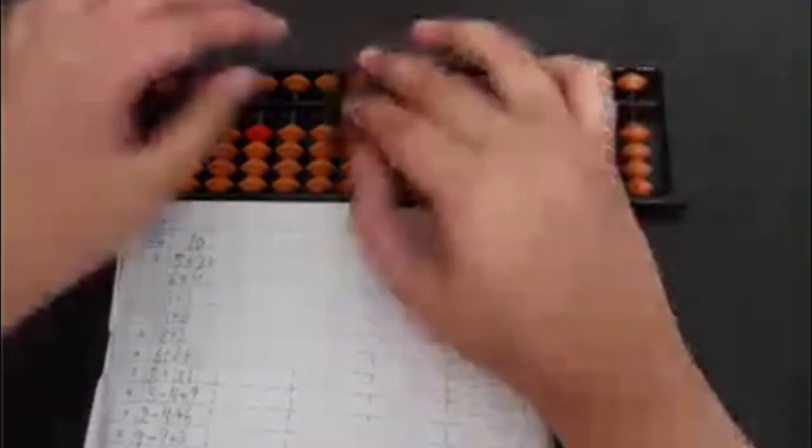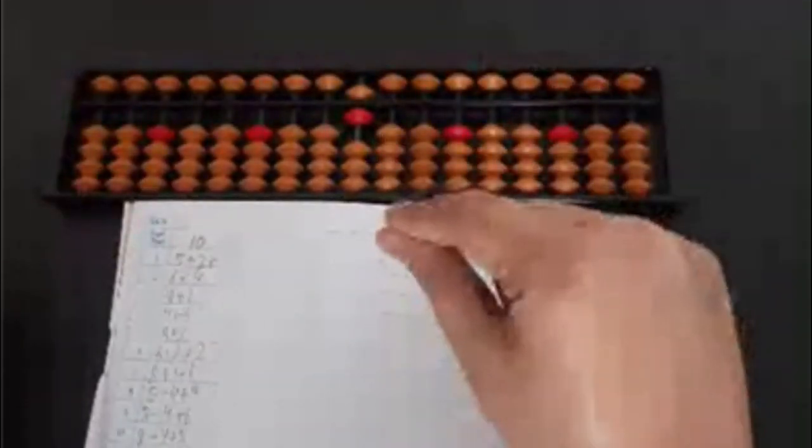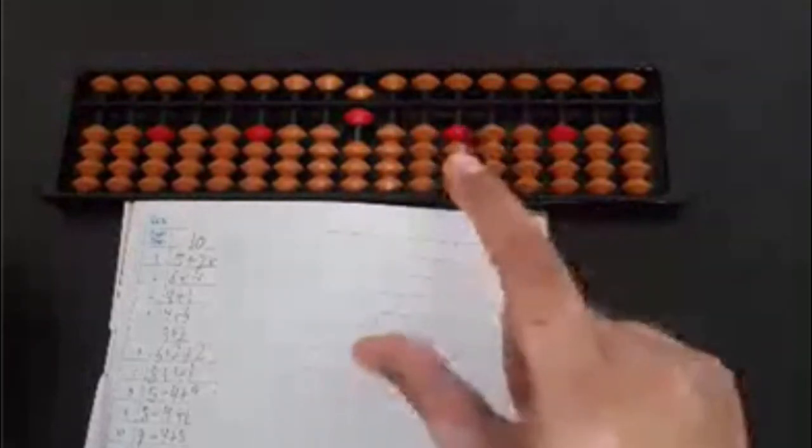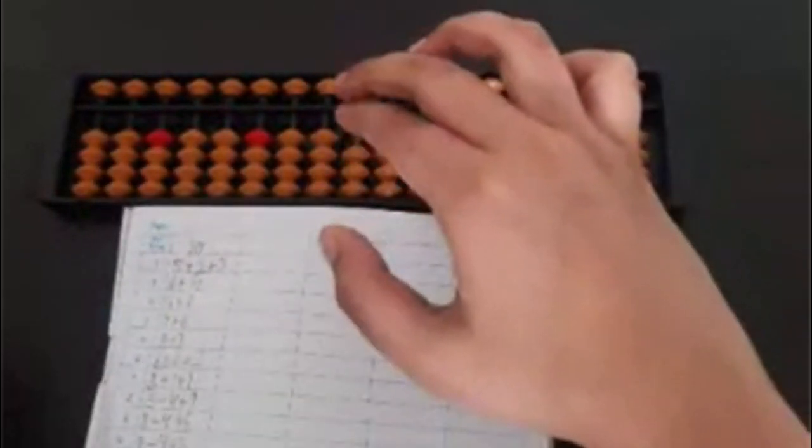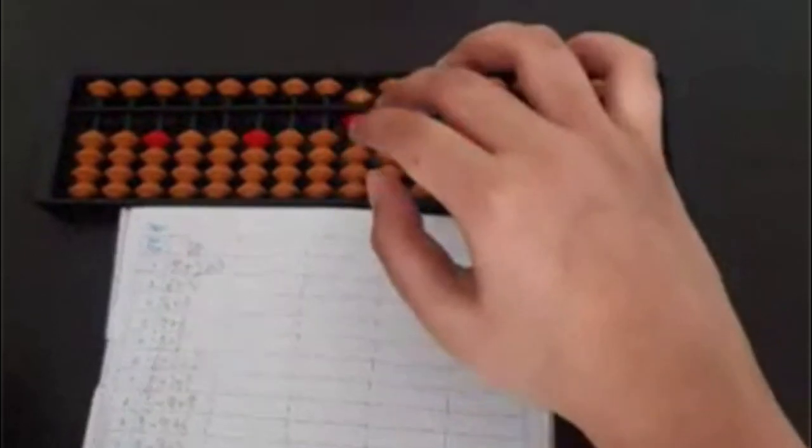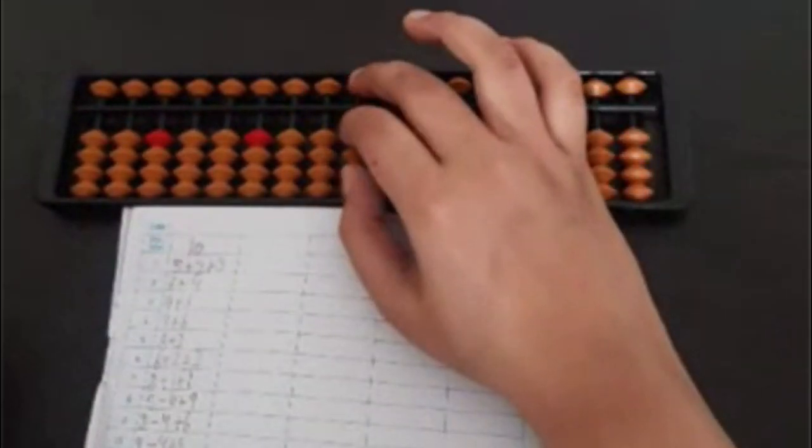And the second one is 6. We will be doing a pinch to add 6, 7, 8 or 9. So now let's do 6. We will be clearing it like this. Reverse scissors. So it will be cleared like this. Minus 6 plus 10.